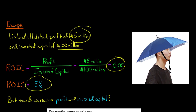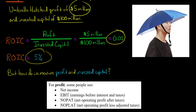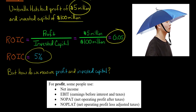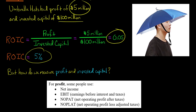So the return on invested capital for that company would be five percent. But here's the catch: how do we measure profit and how do we measure invested capital? Starting with profit — some people use net income, some use EBIT, some use NOPAT (net operating profit after taxes), and some use NOPLAT. There are several different ways to measure profit when calculating return on invested capital.